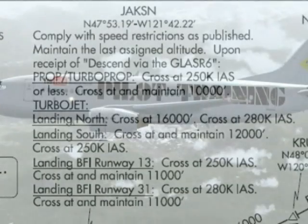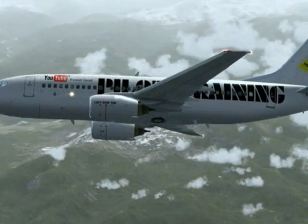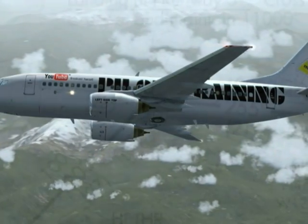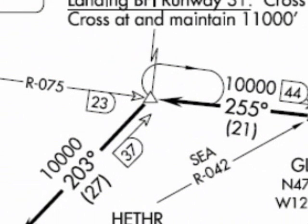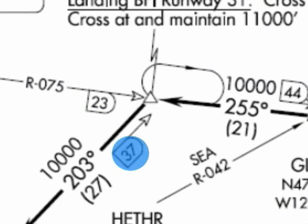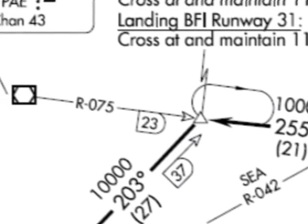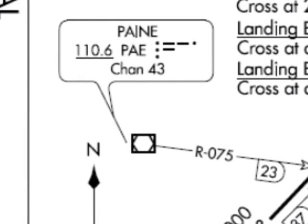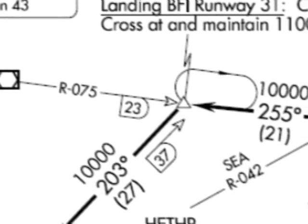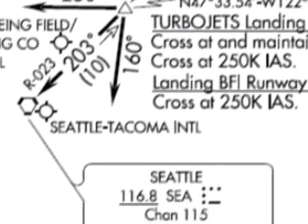This is where planning is very important, and why I recommend programming in the STAR during flight — this way it's fresh in your mind. We also come across new terminology in the form of numbers and arrows. We have a 23 and a 37. Jackson is not a VOR; it's a waypoint, an intersection, an imaginary point in the sky. If your aircraft wasn't equipped with an FMC, your only way to navigate would be to use VORs and this information would be crucial. The 23 indicates that Jackson is 23 nautical miles away from the Payne VOR on an outbound radial of 75. The 37 tells us that Jackson is 37 nautical miles away from the Seattle VOR.